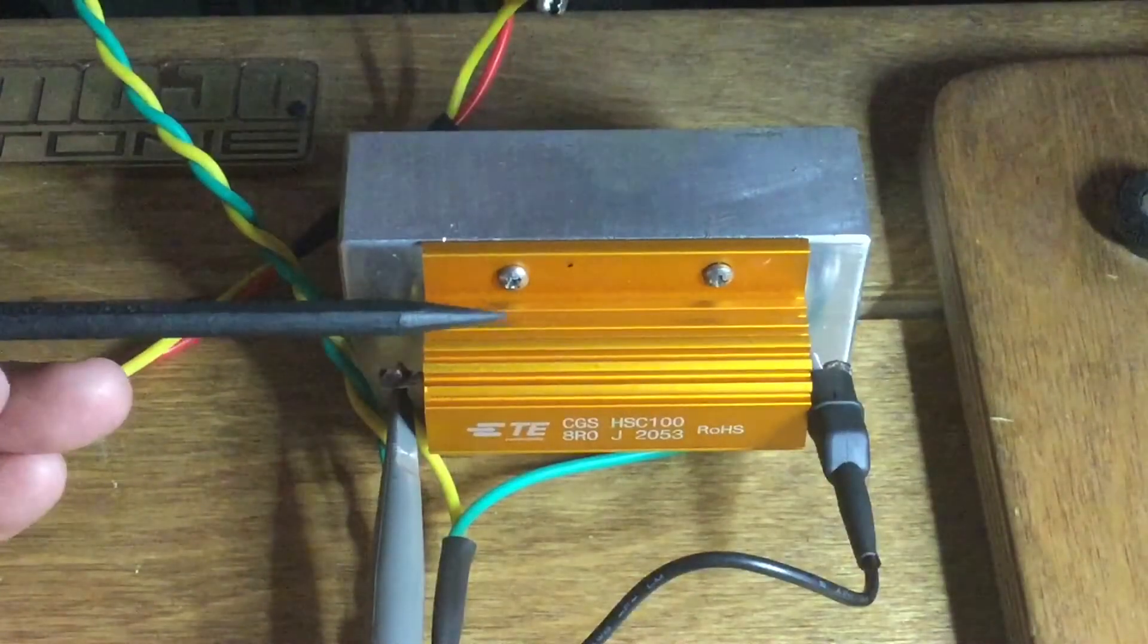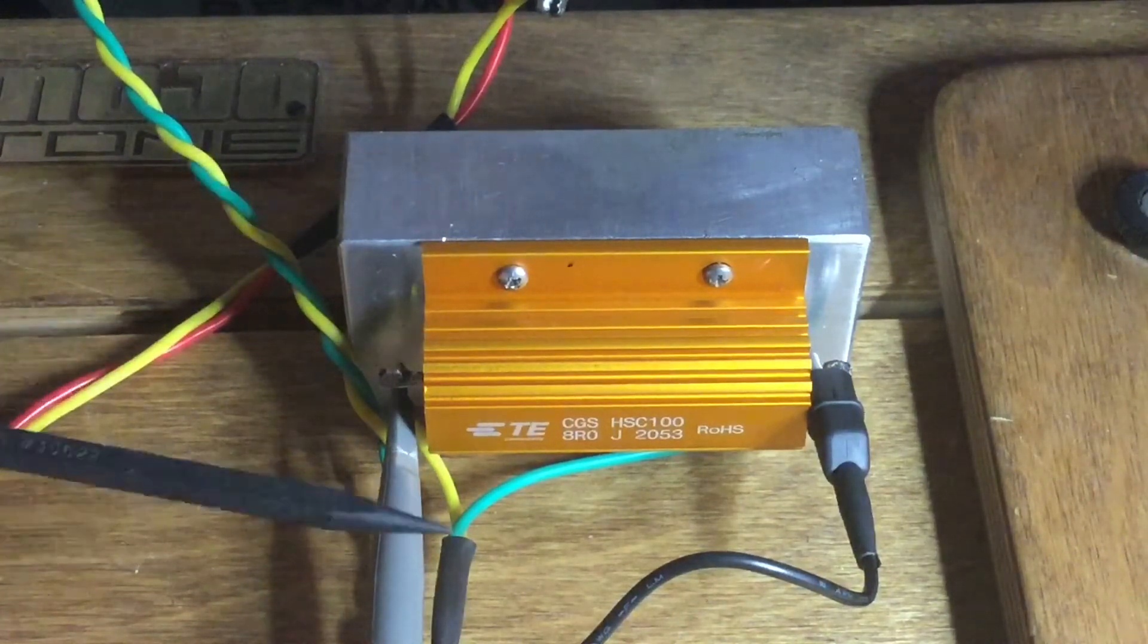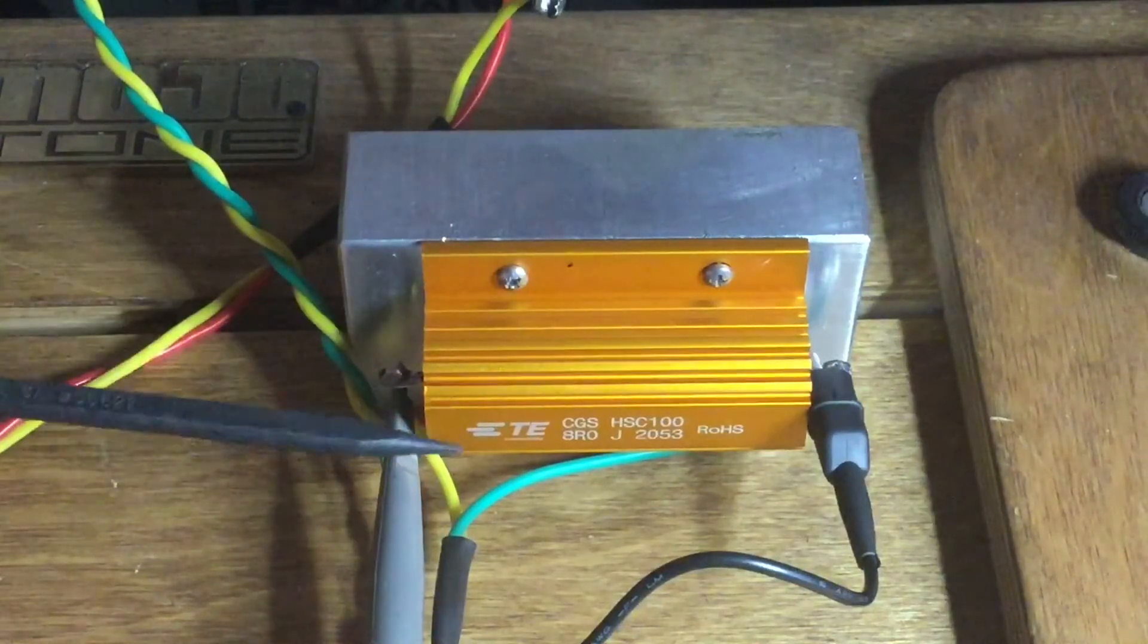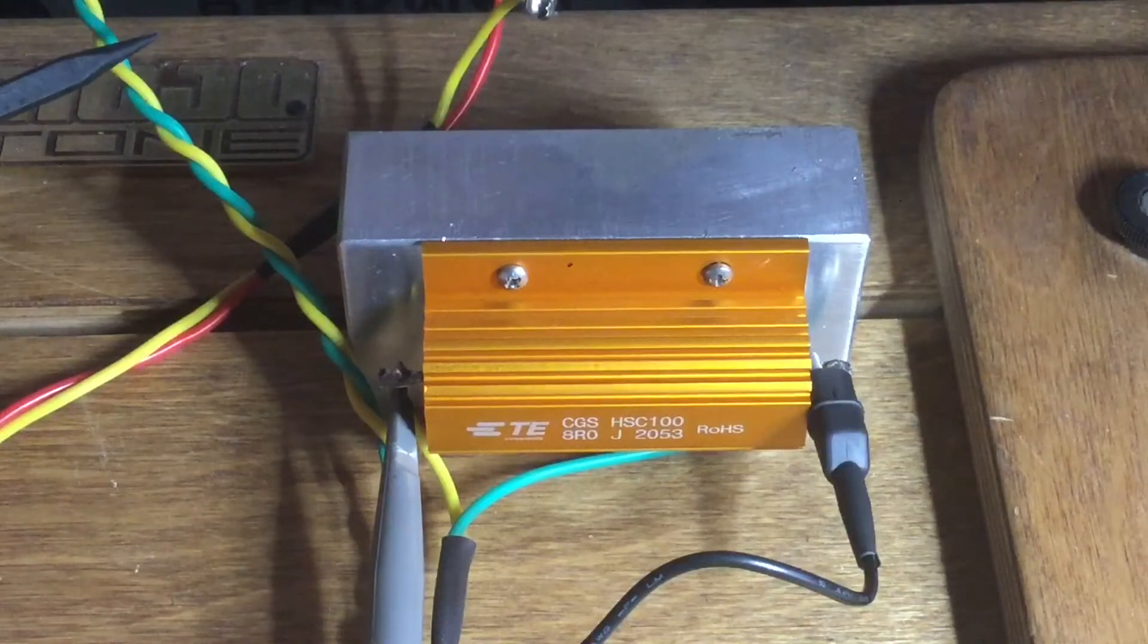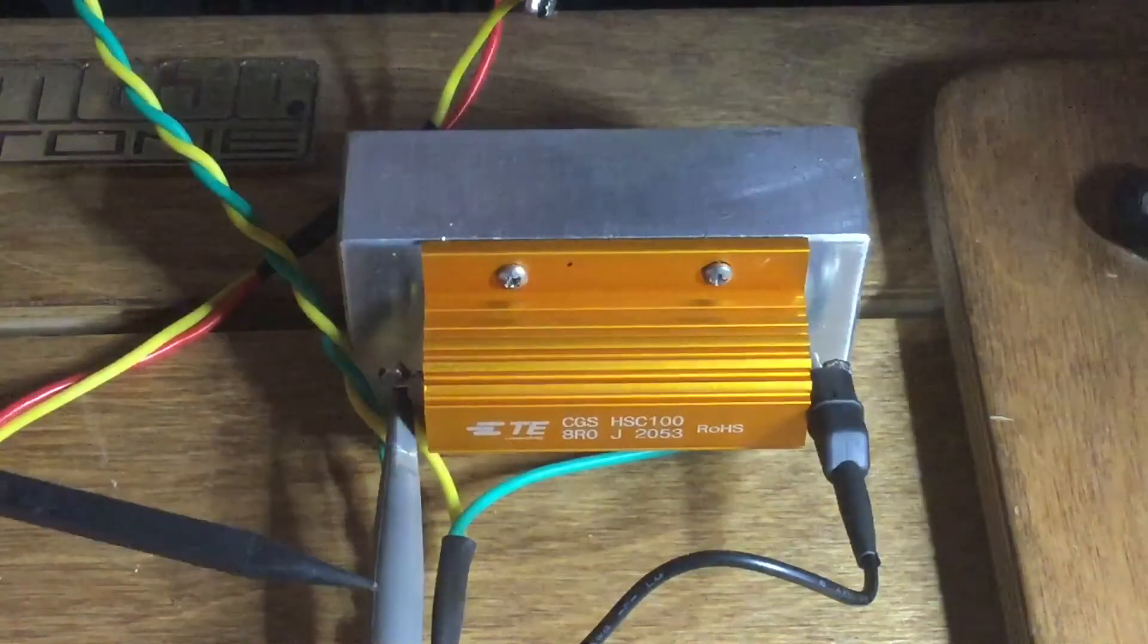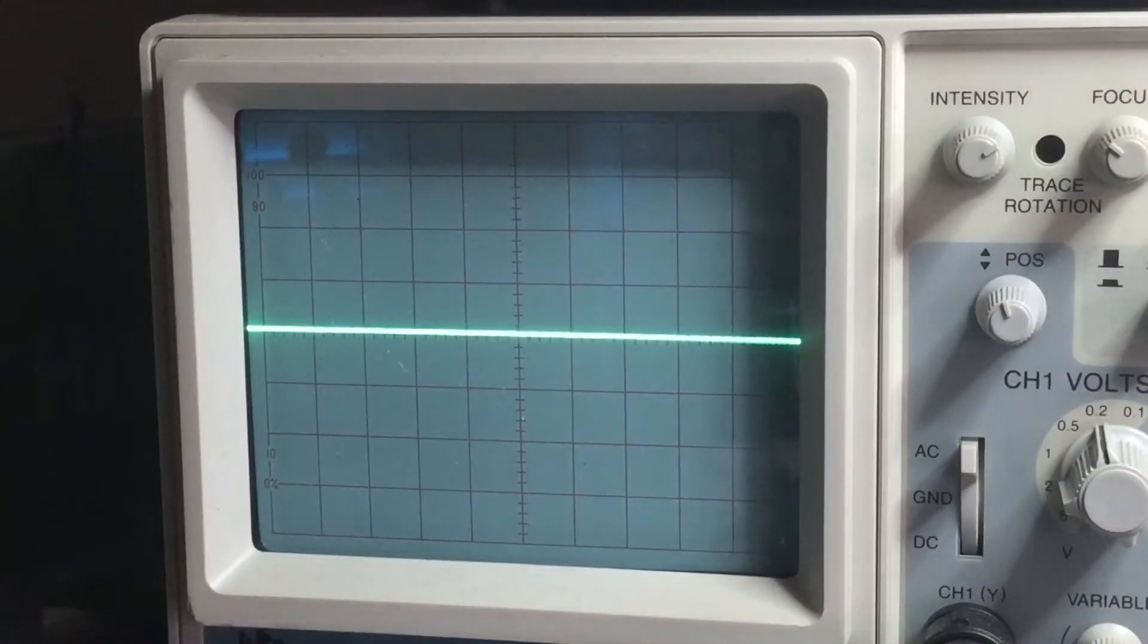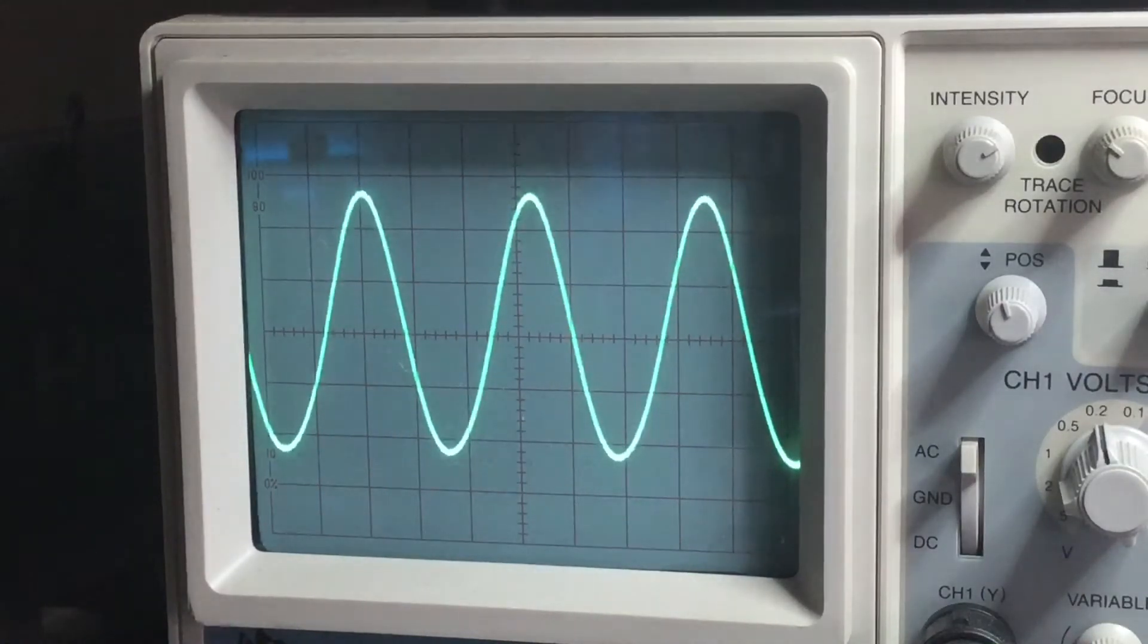This is an eight ohm 100 watt resistor attached to an aluminum heat sink. And we have our oscilloscope attached to the resistor. This resistor is attached to the speaker output terminal. We're going to bring up the volume and we can see a nice clean sine wave. So this shows that the filter capacitors are fine.